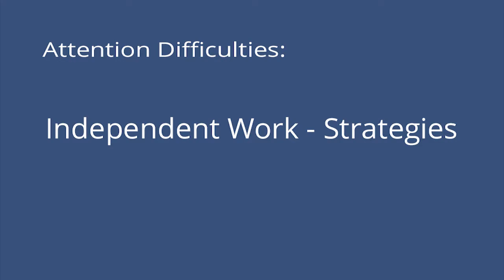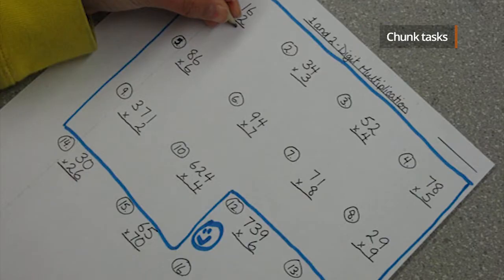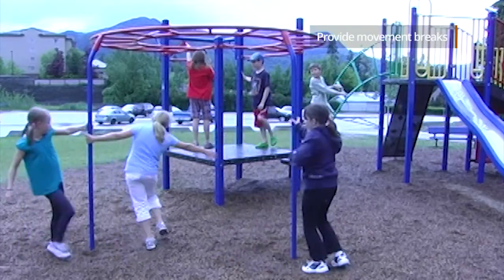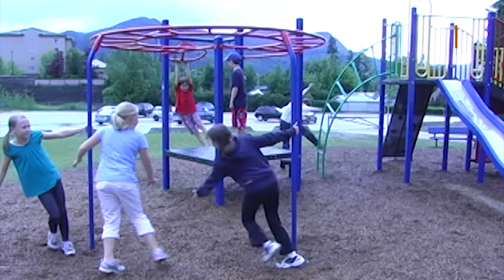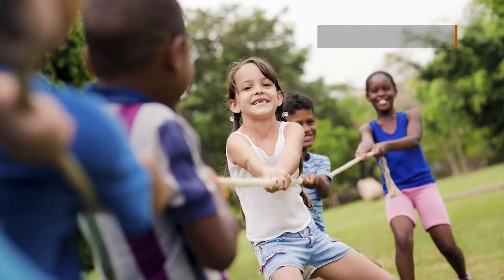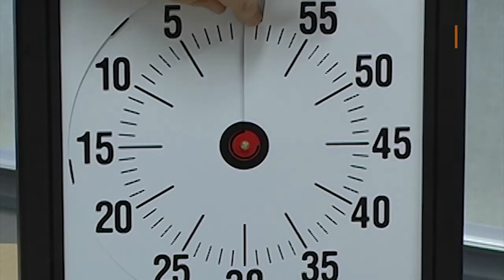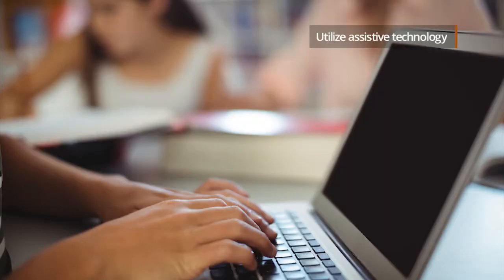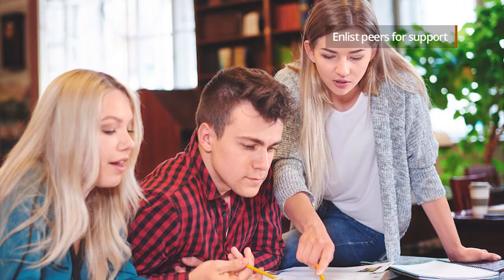For independent work and practice, consider these ideas to help hold your students' attention. Chunk information and provide frequent support, feedback, and prompting. Remove as many distractions as possible and establish some quiet, less distracting work areas. Provide scheduled movement breaks and opportunities for movement during work times, like working at a stand-up desk or in a chair that rocks slightly. Make activities more game-like and fun. Use a visual timer, but only if this doesn't increase the student's level of anxiety. Utilize technology as a tool to help hold your students' attention and to complete tasks. And finally, enlist peers to help prompt the student to remain focused on the task at hand.